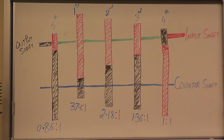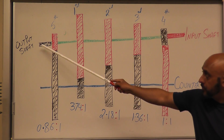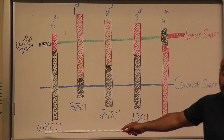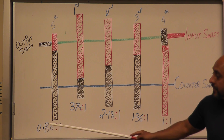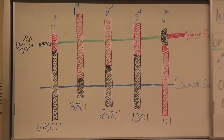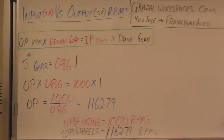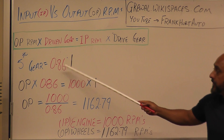Which means if your engine is running at 1,000 RPMs, the wheels are running at 1,000 RPMs. For our last gear — fifth gear — we're looking at the driven gear ratio of 0.8621. Plugging everything into the formula for fifth gear gives us that gear ratio of 0.8621.